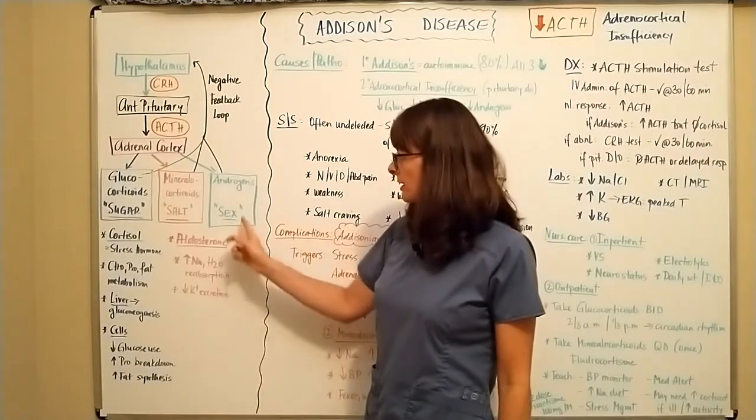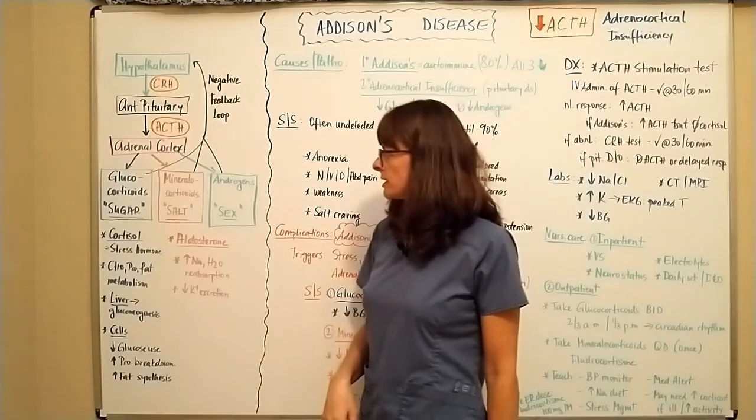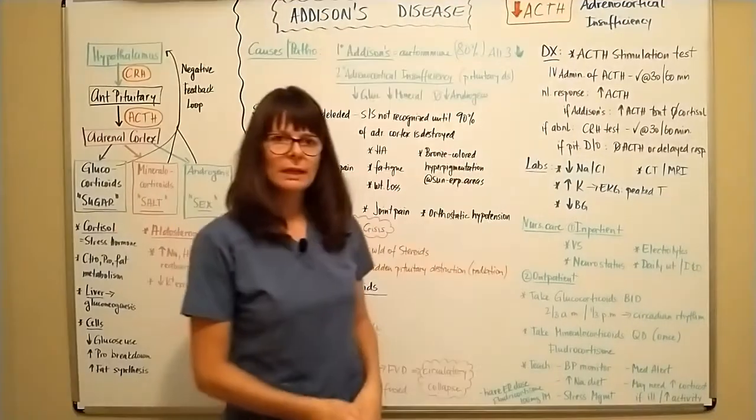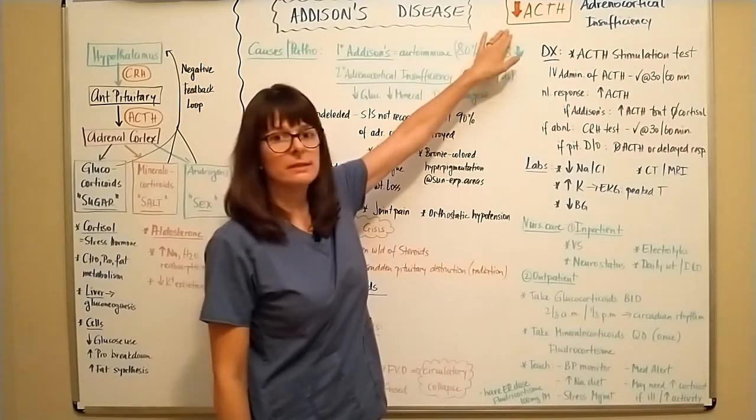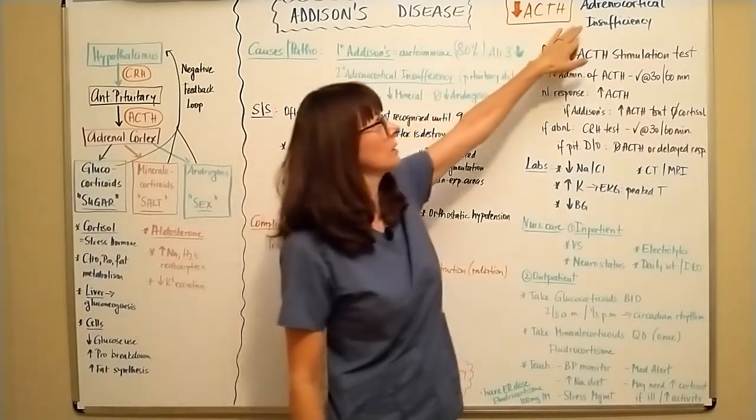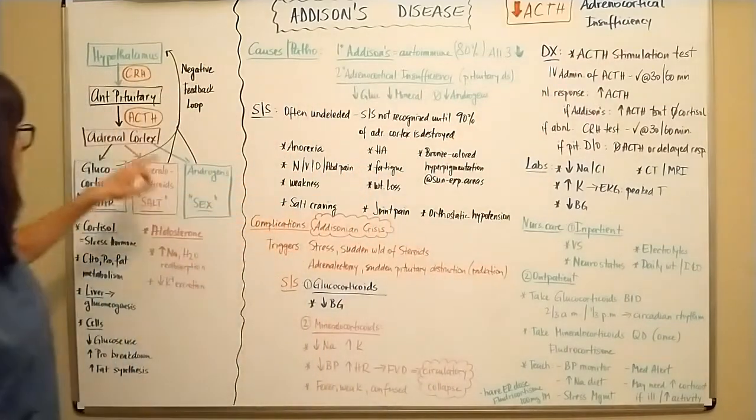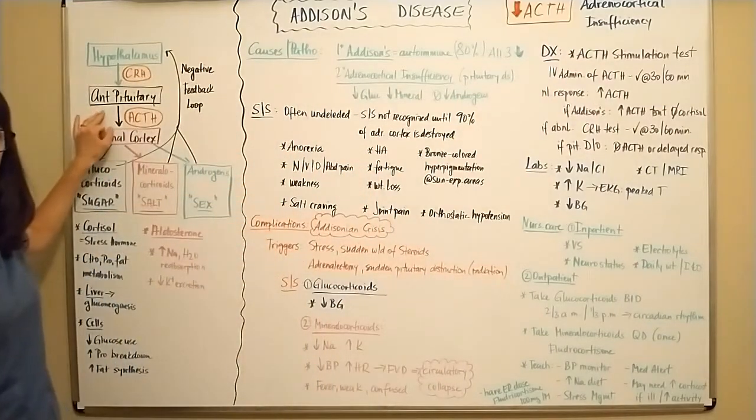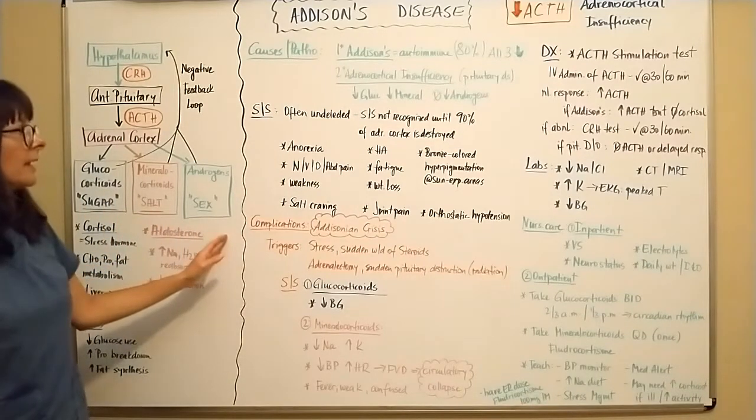And then we have our sex hormones, androgens, which are also important here. In Addison's disease, we have decreased ACTH or also called adrenocortical insufficiency. So now we're dealing with decreased levels of ACTH, which will lead to decrease of glucocorticoids, mineralocorticoids, and androgens.